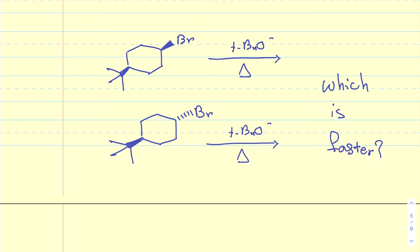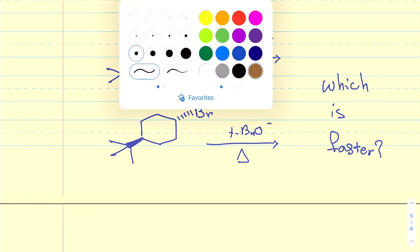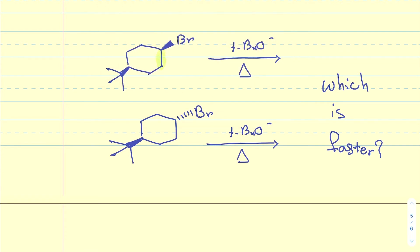Alright, so first of all it's obvious that these reactions are going to be E2, right? So we have secondary substrates, a secondary alkyl halide in both cases, and we are combining that with a strong bulky base. So there is no opportunity for any other kind of reaction. And this is on a cyclohexane.